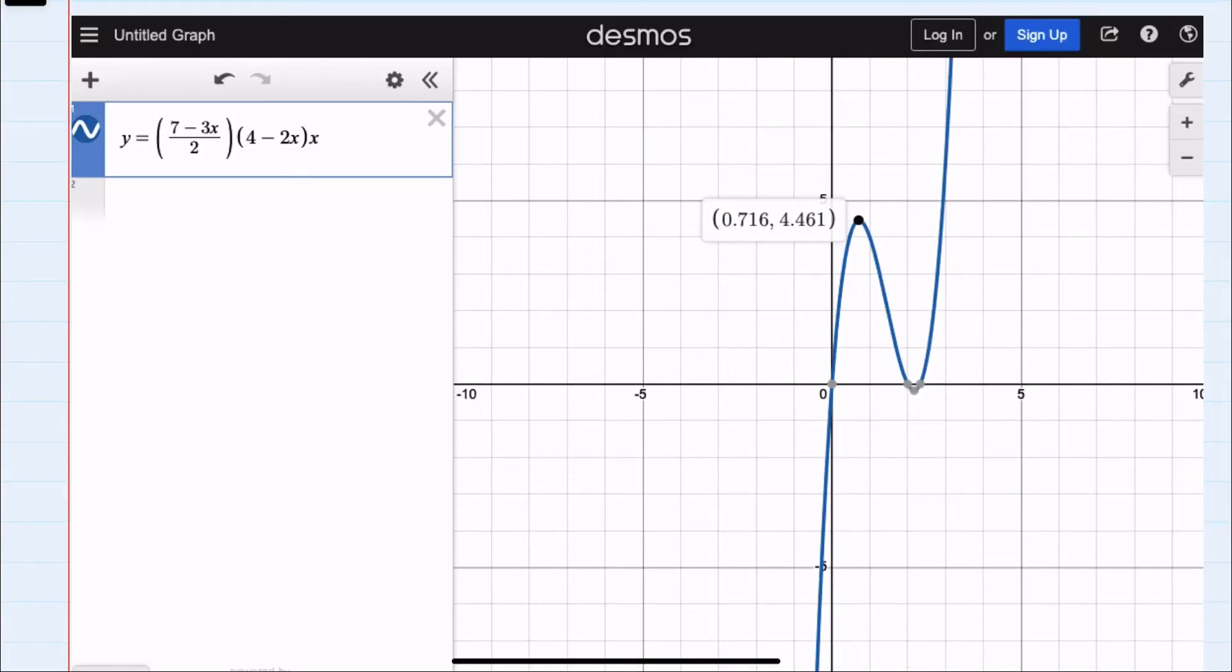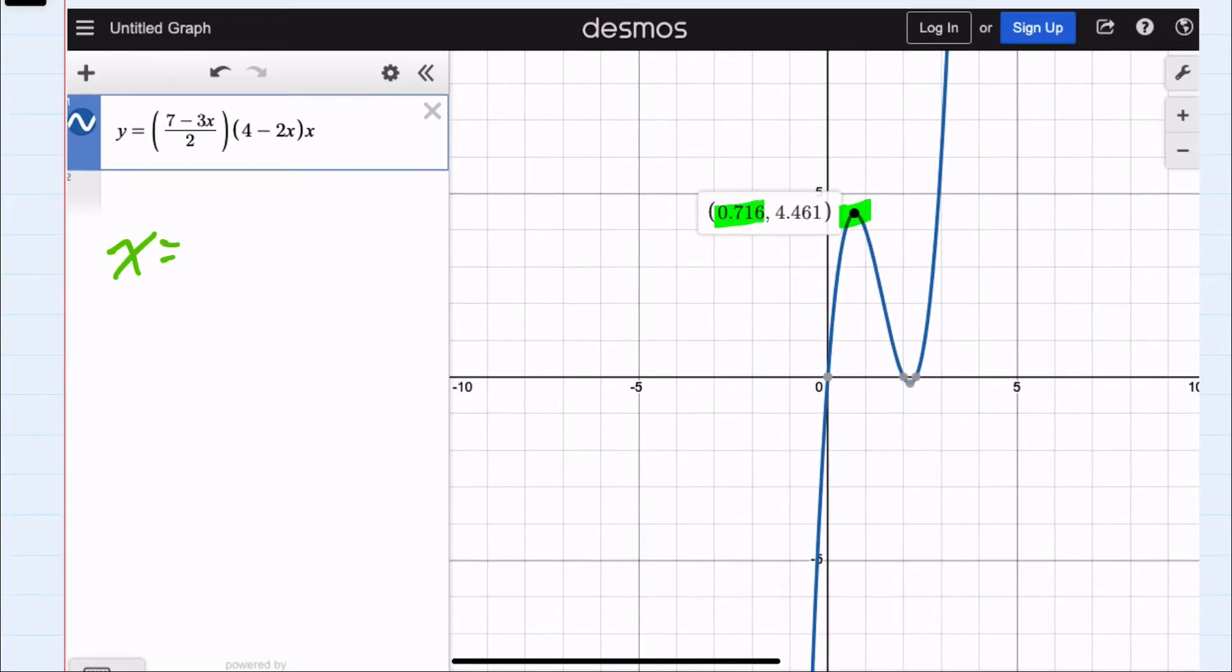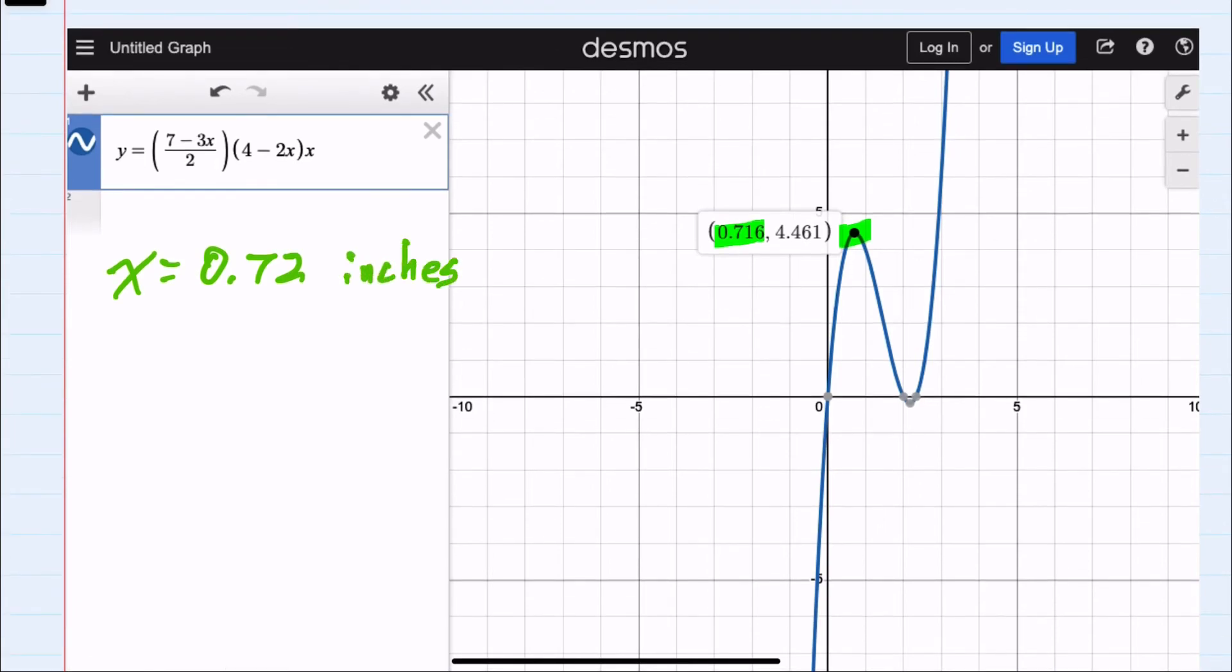I can see that the maximum value here is whenever our input into this function, our x, is equal to... We were asked for two decimal places, so I will round here. That would be 0.72 rounding to two decimal places. If we were to fold the box with that dimension where x is 0.72, and those dimensions are inches, and when we substitute that value into our volume function, the output, or y value, will be 4.461. So rounding to two decimal places would be 4.46, and these would be inches cubed for volume.